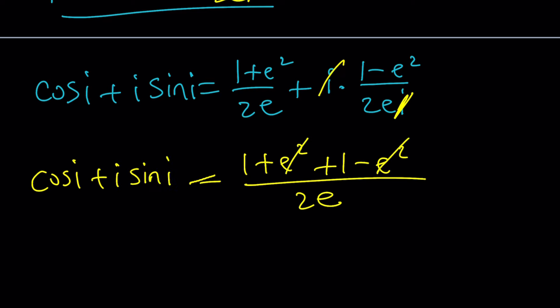That's going to give us cosine i plus i times sine i. Okay, i squared cancels out. We end up with 2 over 2e, which is 1 over e. Beautiful. You know why this is beautiful? Because 1 over e is equal to the left hand side. What was on the left hand side? Did you forget?